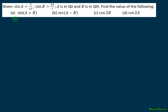We consider the given: sin A is equal to 5 over 13, tangent B is equal to 24 over 7. To make the computation easier, we need to solve first for cosine A, sine B, and cosine B. So let's find cosine A first.